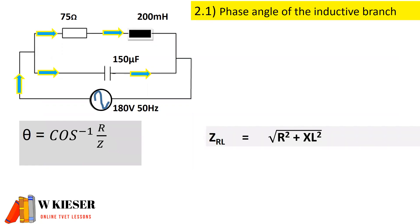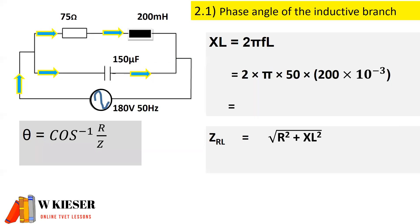To calculate the impedance total, we first need to calculate the inductive reactance, which is equal to 2 times pi times the frequency of 50 hertz multiplied by the value of the inductor. To convert millihenry into henry we multiply by 10 to the minus 3. Therefore the inductive reactance is 62.84 ohms.